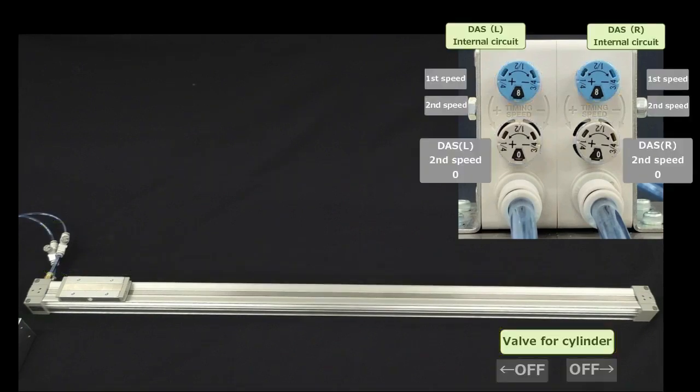Next, switch the valve on for operating the cylinder. The circuit inside the deceleration controller starts the second speed immediately after switching the valve that drives the cylinder from the opposite end.